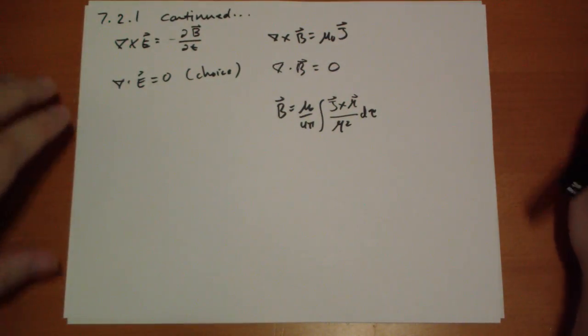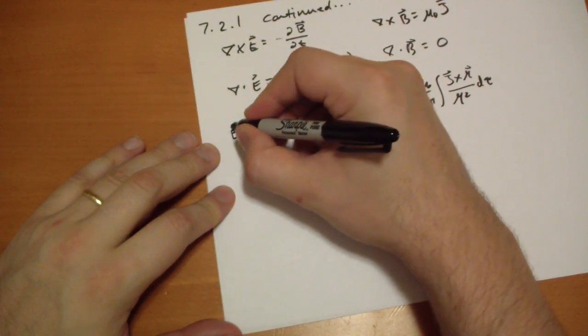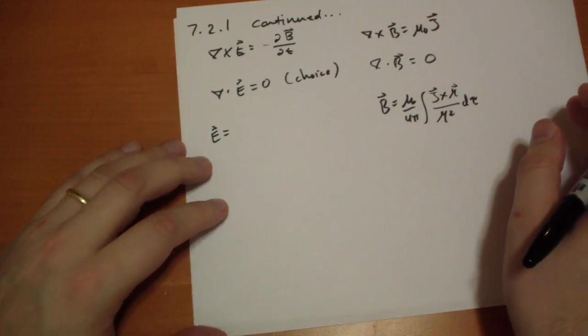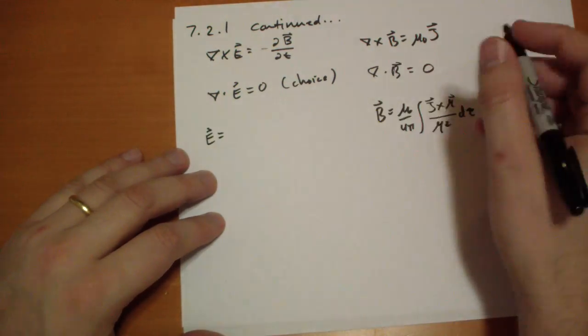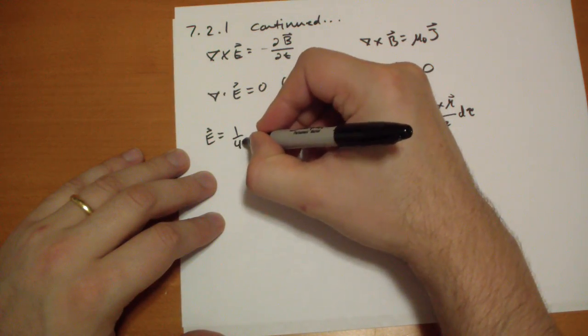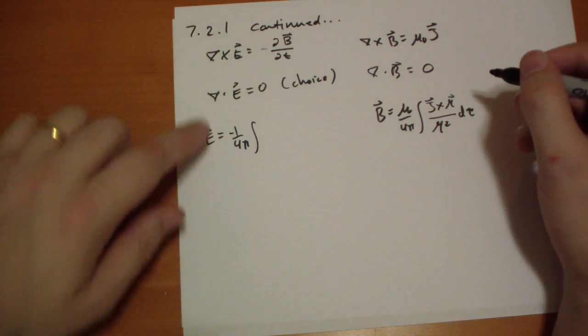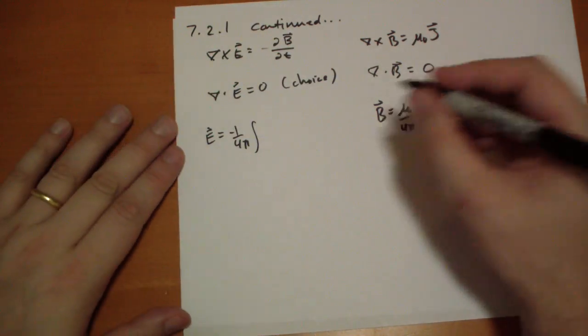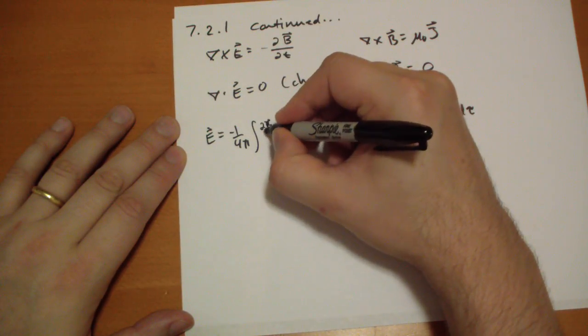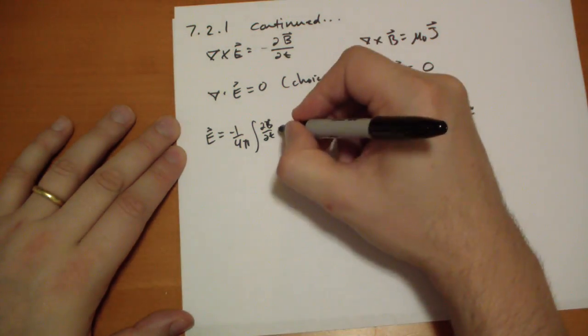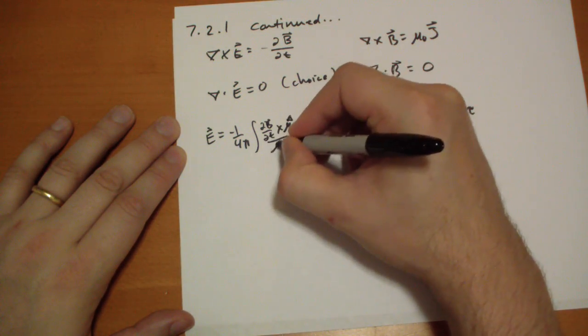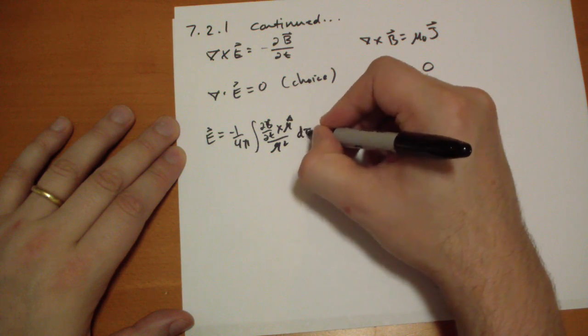And so we can just translate this over here and say the E vector is equal to, well the mu naught is part of the J, so we don't have that, we have 1 over 4 pi. Oh, we need a minus sign. Integral of, well it's not J, it's the time derivative of B, cross r hat over r squared d tau.